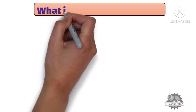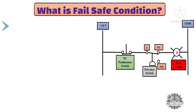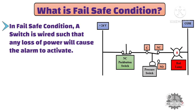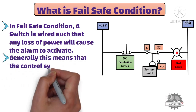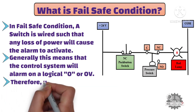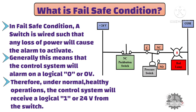Now, what is fail-safe condition? In a fail-safe condition, the pressure switch is wired such that any loss of power will cause the alarm to activate. Generally this means the control system will alarm on a logical 0 or 0 volt. Therefore, under normal healthy operations, the control system will receive a logical 1 or 24 volt from the pressure switch. As you can see from the picture, we use the normally closed contact of the pressure switch, which opens when any power loss or failure occurs. Additionally, a normally closed push button is connected in series with the pressure switch in order to check the system.